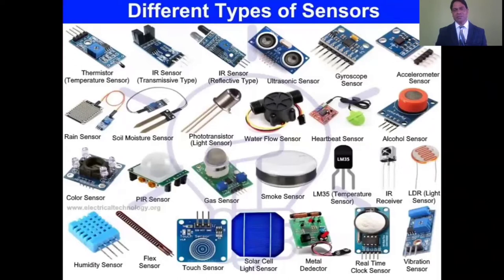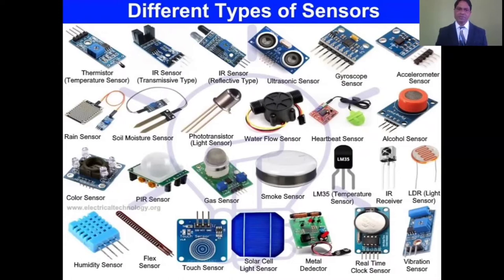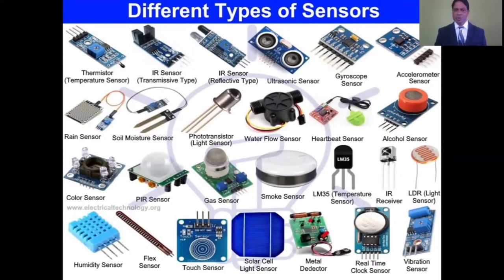Soil moisture sensors — these sensors are making a lot of difference in farming or in agriculture. Soil moisture sensors detect the moisture in the soil so that timely water can be given to the fields or plants. Phototransistor, water flow sensor — water flow sensor detects the level of water in a tank or in other water bodies.